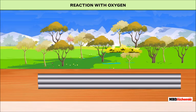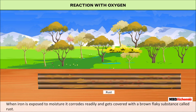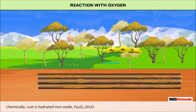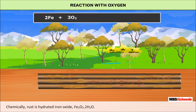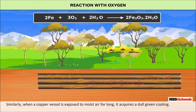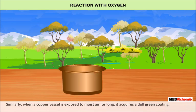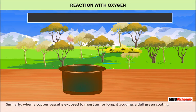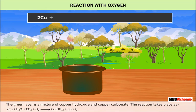Reaction with oxygen — Rusting: When iron is exposed to moisture, it corrodes readily and gets covered with a brown flaky substance called rust. Chemically, rust is hydrated iron oxide, Fe₂O₃·2H₂O. Similarly, when a copper vessel is exposed to moist air for long, it acquires a dull green coating. The green layer is a mixture of copper hydroxide and copper carbonate.